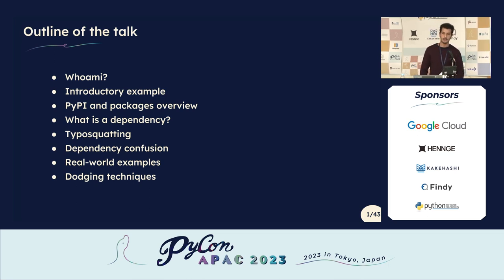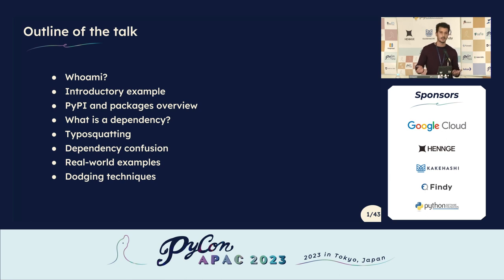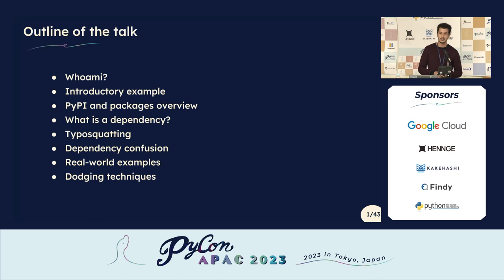So this is the outline of my talk. First, I will do a small introduction about myself and an introductory example to make you more familiar with what dependency confusion is. I will also show you PyPI and packages overview, what is a dependency, what is typosquatting, dependency confusion, some real-world examples, and some dodging techniques at the end.